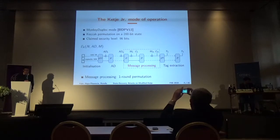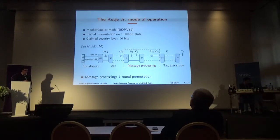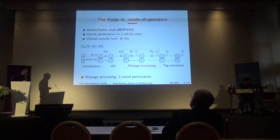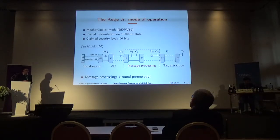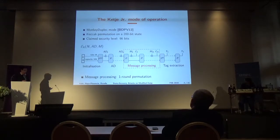Here is the mode of operation of KETJER. It is based on the monkey-duplex mode, basically the same team as the KETJER encryption algorithm. It relies on the KETJER permutation on a smaller state of 200 bits, and the claimed security level is 96 bits. The 200-bit state is divided into two parts: the first is only 16 bits, which is the rate, and the main part of the state is called the capacity.